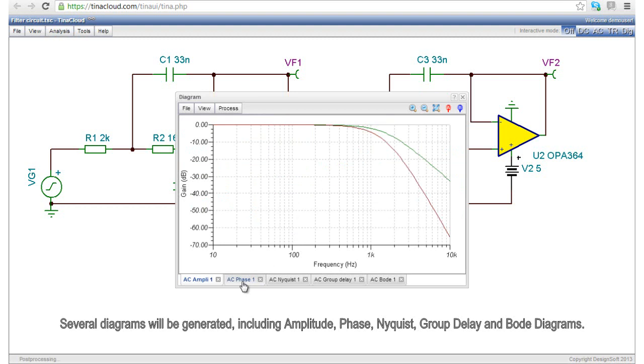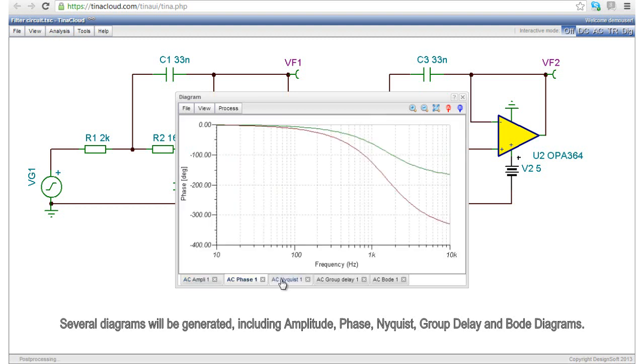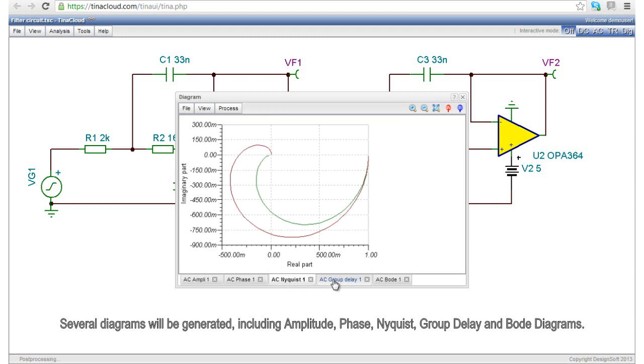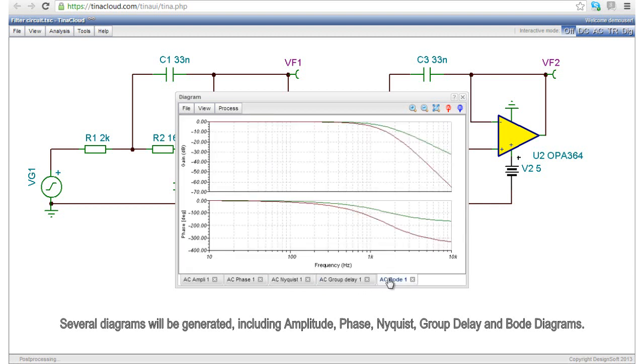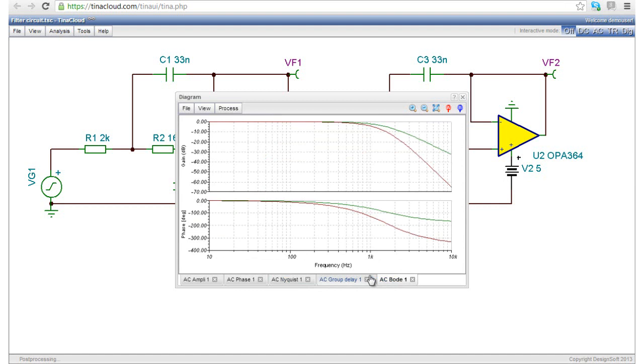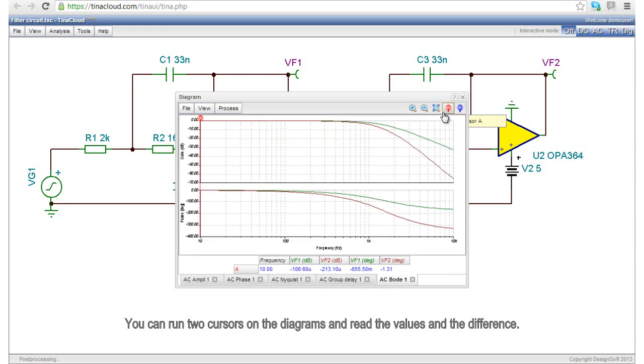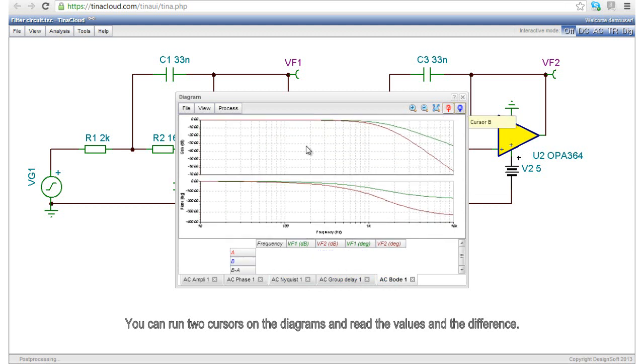including Amplitude, Phase, Nyquist, Group Delay, and Bode diagrams. You can run two cursors on the diagrams and read the values and the difference.